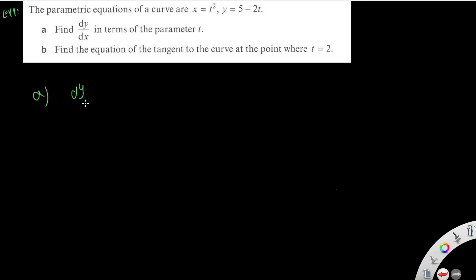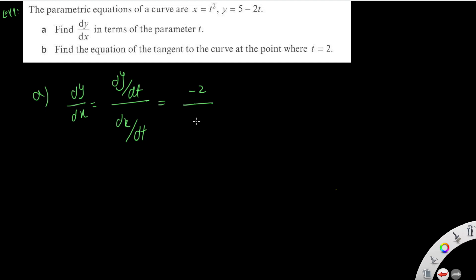For dy/dx, since y is not directly in terms of x, we differentiate y with respect to t and x with respect to t. The derivative of y is negative two, and the derivative of x is two t. Simplifying gives dy/dx equals negative one over t.